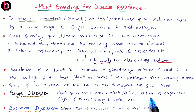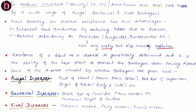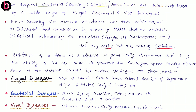Second is red rot of sugarcane, causing redness on the trunk of sugarcane with very little sugar juice at that region. Next is blight of potato, which has two types: early blight and late blight. For bacterial diseases: black rot of crucifers, citrus canker caused by Xanthomonas citri, which is very important, and bacterial blight of cowpea. Third are viral diseases: tobacco mosaic virus, chili mosaic virus, and turnip mosaic virus.